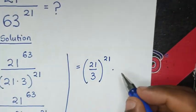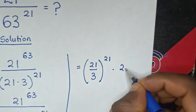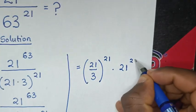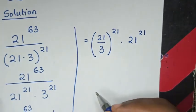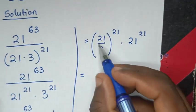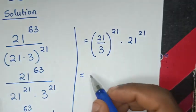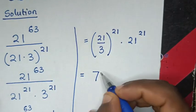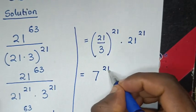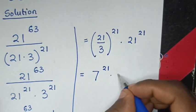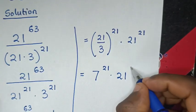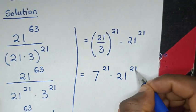So 21 power of 21 — then it will be equal to 21 divided by 3, which is 7. So 7 power of 21 times 21 power of 21.